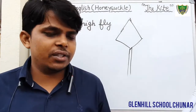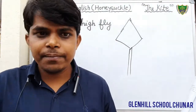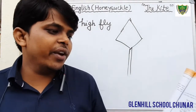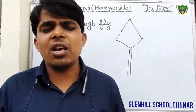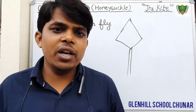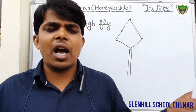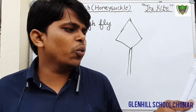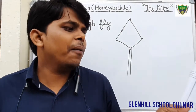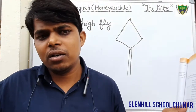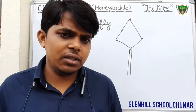As over tides of wind it rides — 'tides' means a kind of stream. As over tides of wind it rides. The poet is saying the kite rises high in the air. When there is wind in the air, the kite flies very high. The wind rides the kite.